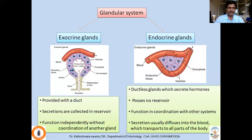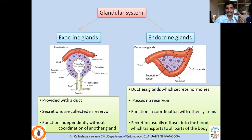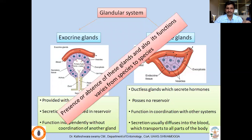Another important difference is that exocrine glands function independently without coordination from another gland — no stimulus is needed from another organ to release that specific substance. Whereas endocrine glands function in coordination with other systems: when they receive a stimulus from other glands or organs, they start secreting, and their secretions mix with the blood and reach the effector organs. The presence, absence, and functions of these glands varies from species to species.